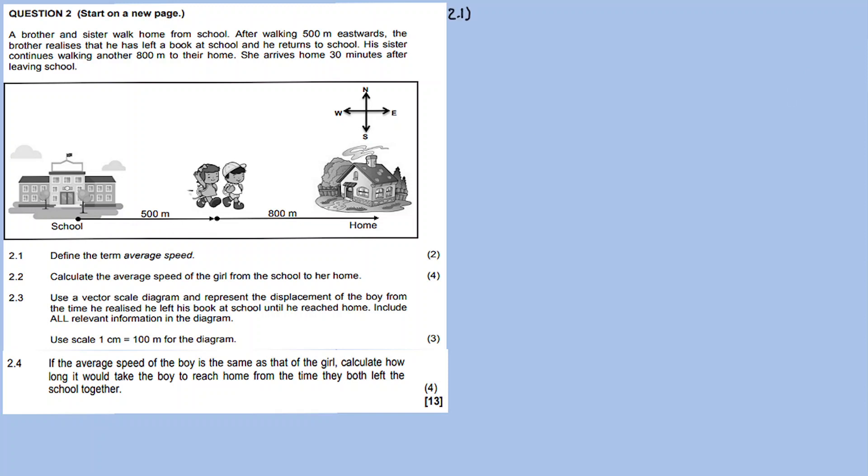Question 2.1: define the term average speed. Okay, average speed. Now a bit of advice — a heads up — when it comes to vectors.